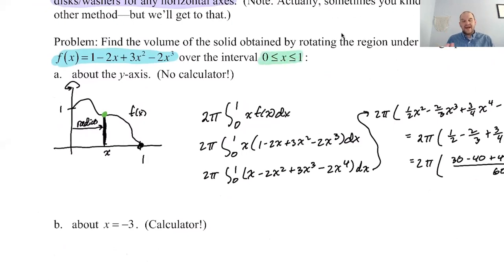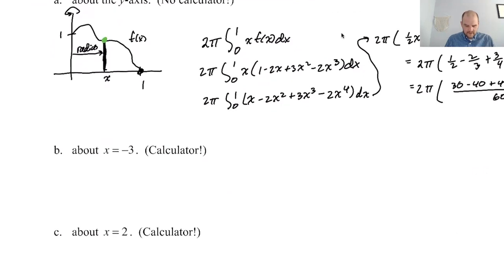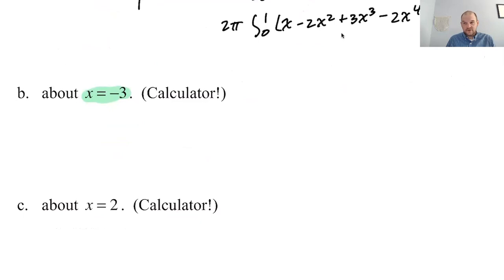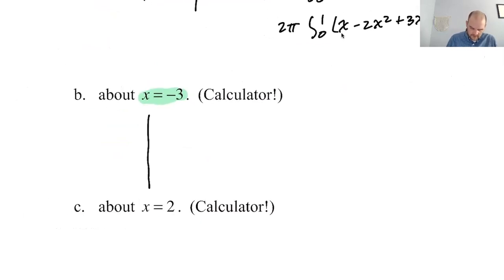We're only going from 0 to 1. So the axis that we're going to use here is x = -3. So let's try to draw a picture. Doesn't need to be accurate, just needs to be usable. So those are going to be our bounds.